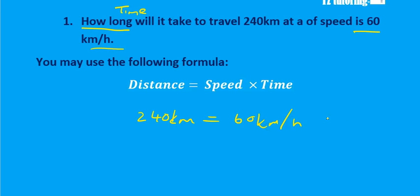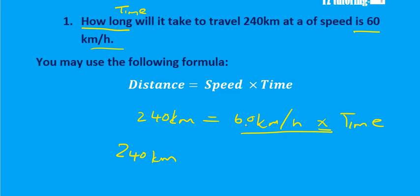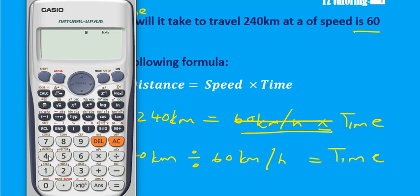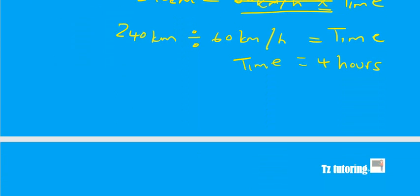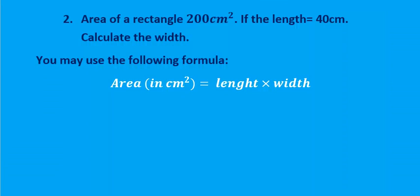Remember the inverse rules: the 60 kilometers per hour is multiplied, so to cancel it, we use the inverse of multiplication which is division. We divide on the other side, so we take 240 and divide by 60, and we get 4 hours. So time equals 4 hours.